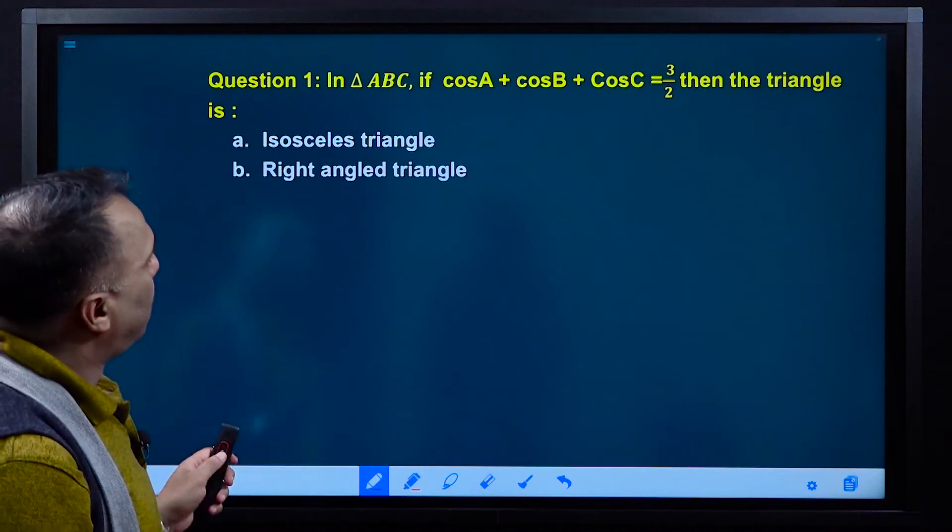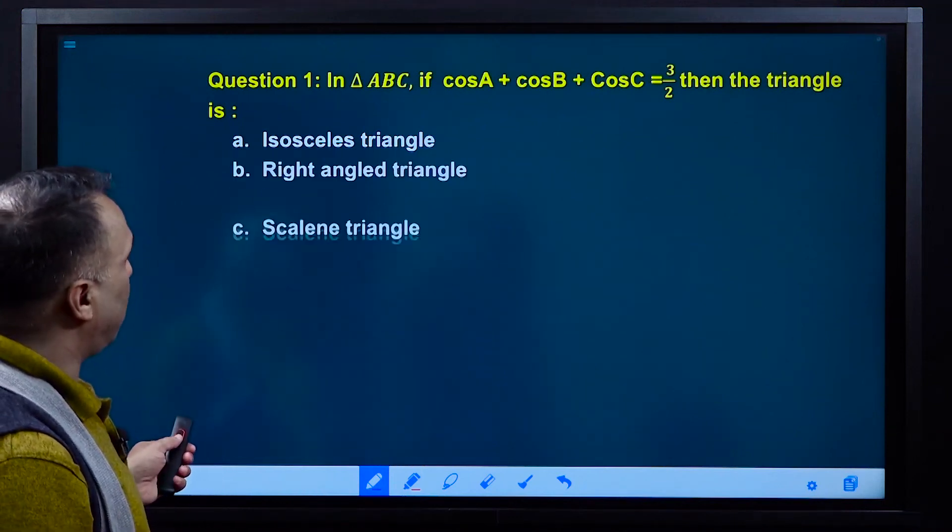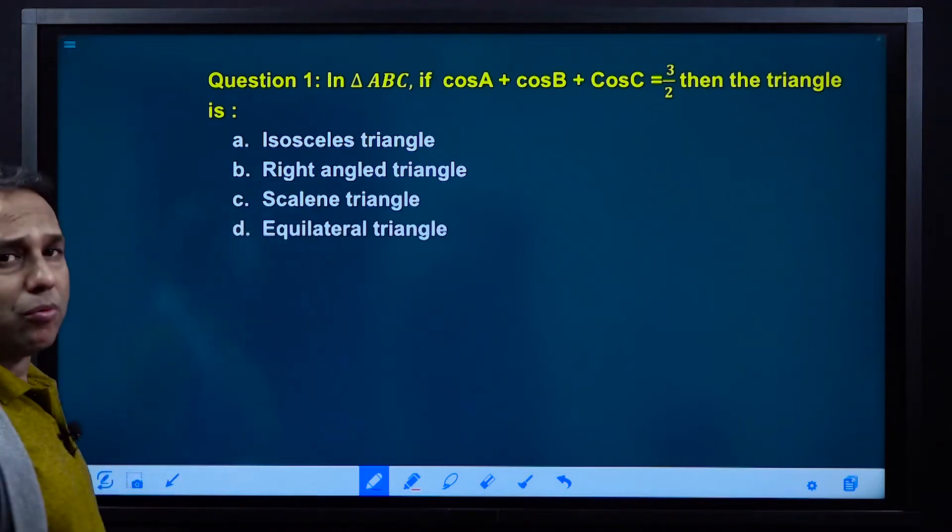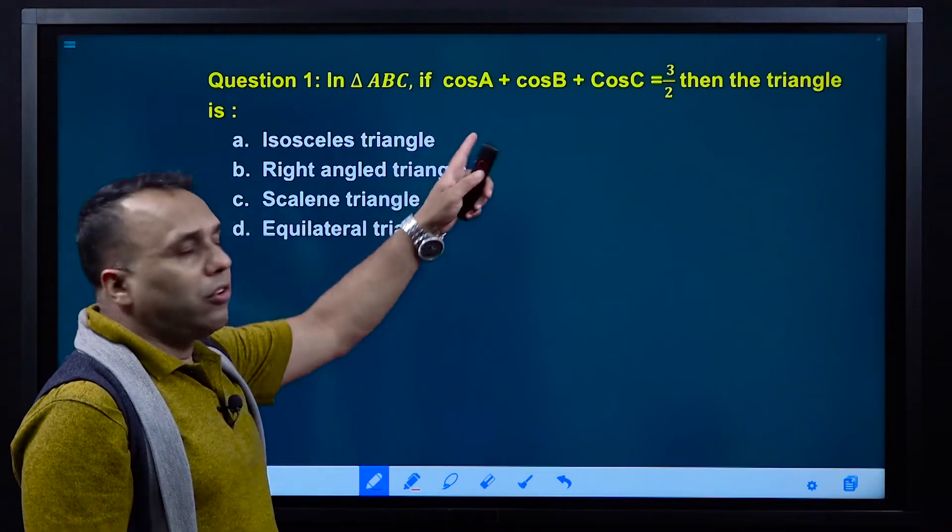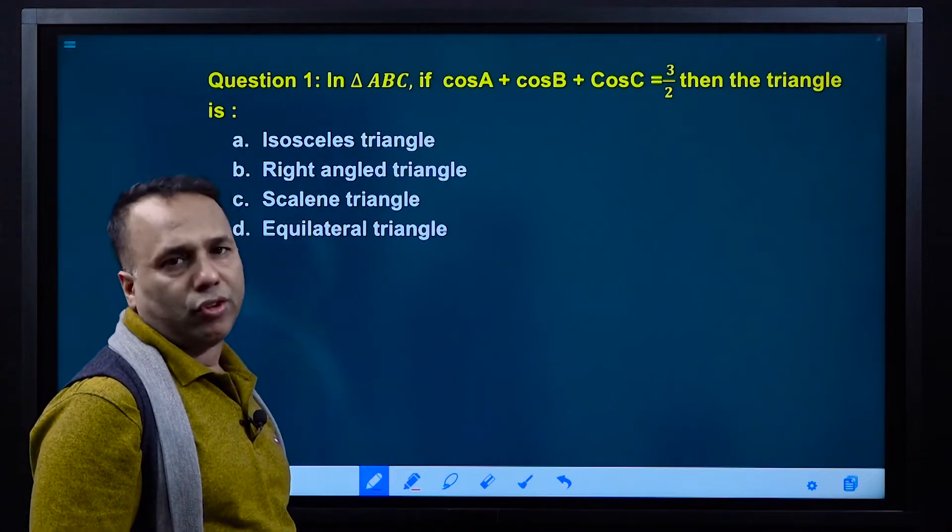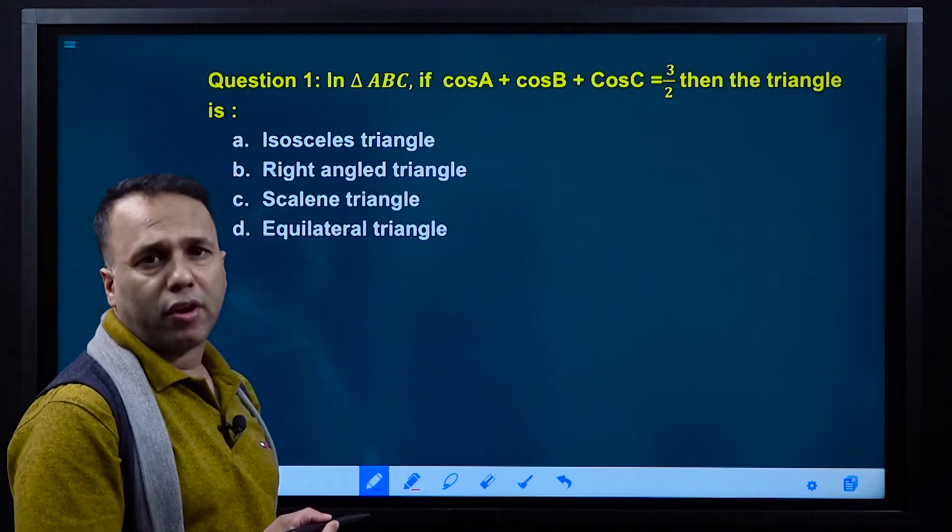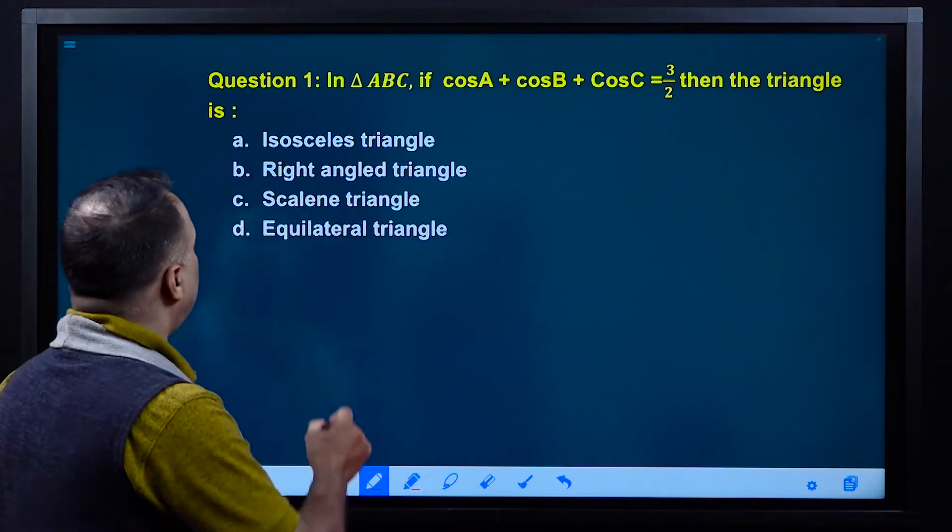Question 1: In triangle ABC, if cosA + cosB + cosC equals 3/2, then the triangle is? The objective to solve this question is that conditional identities are not going to be used. We will have to change the option to the current and do the work. The answer is: